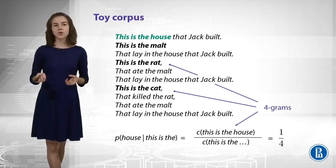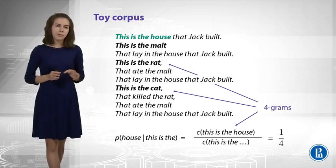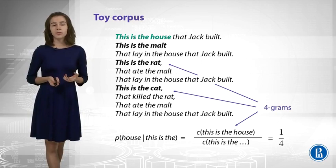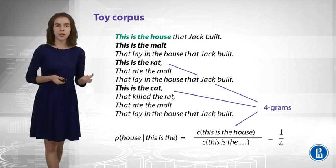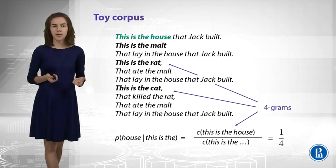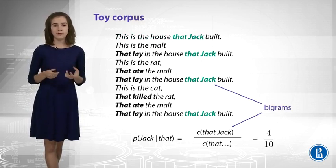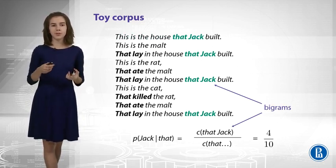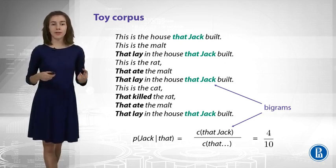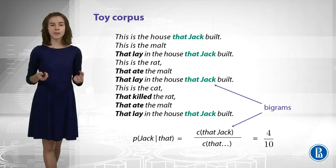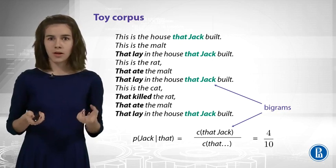And we can try to choose the best n, and we will speak about it later. But for now, what about bigrams? Can you imagine what happens for bigrams? For example, how to estimate probability of Jack given built. Okay, so we can count all different bigrams here, like 'that Jack,' 'that Lay,' etc. And say that only four of them are 'that Jack.' It means that the probability should be 4 divided by 10.